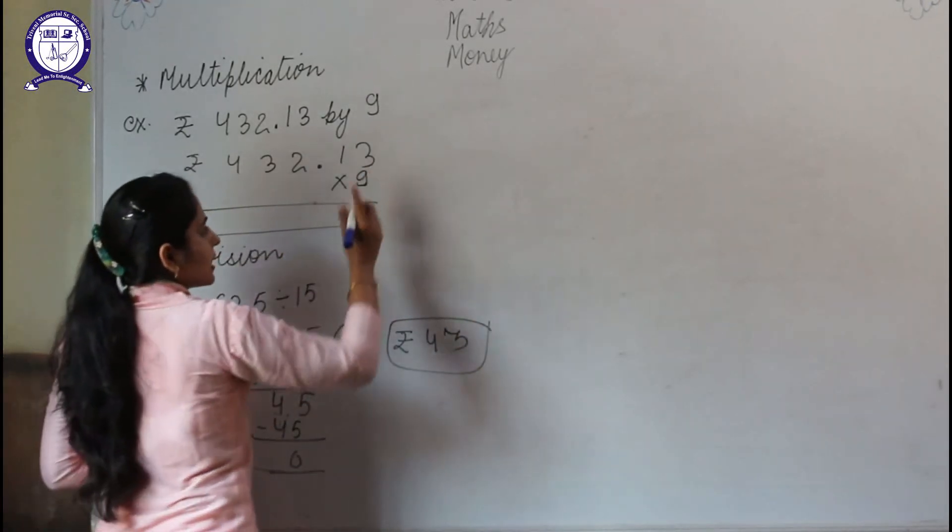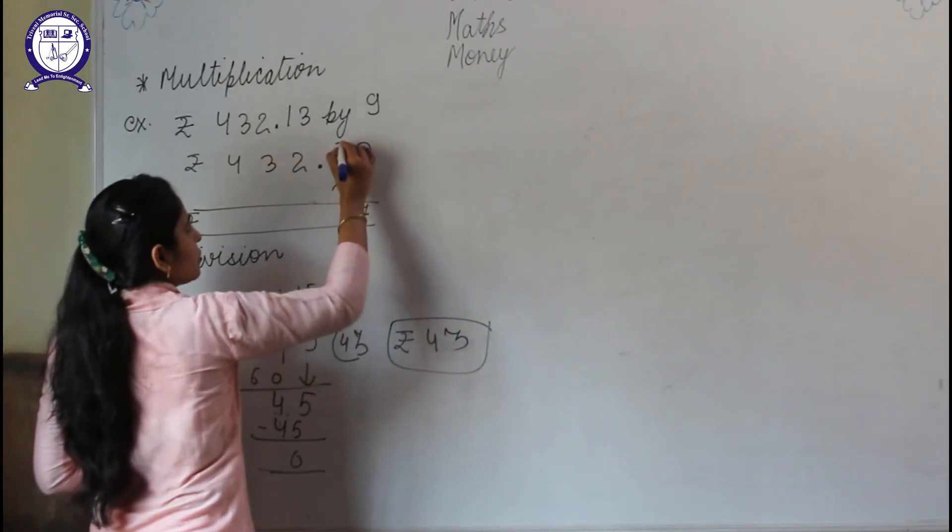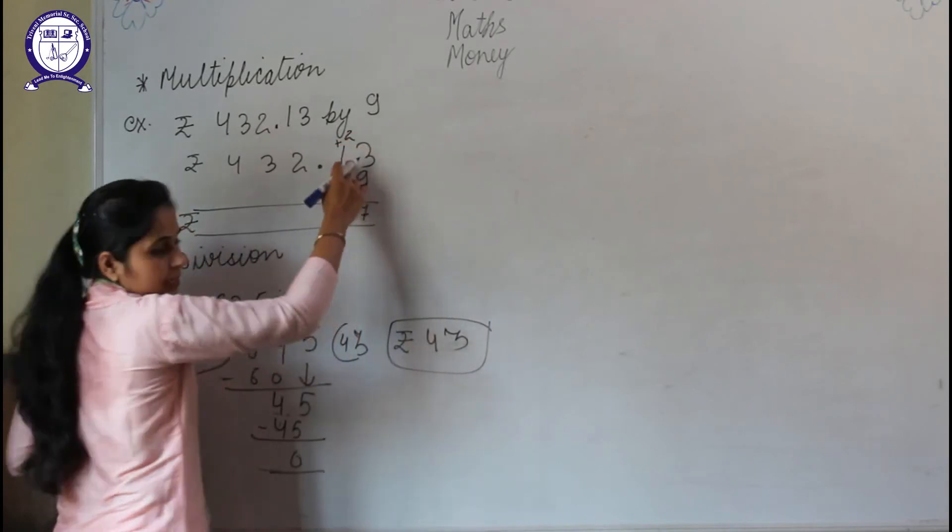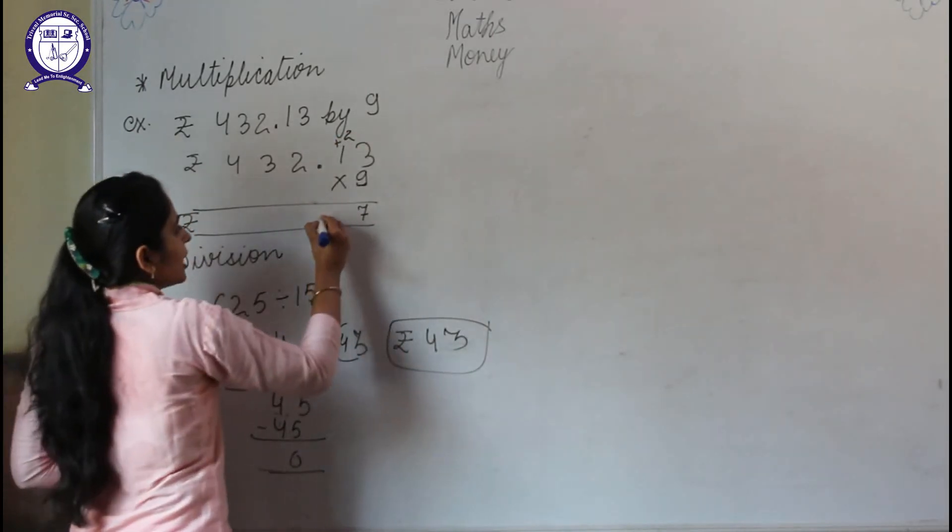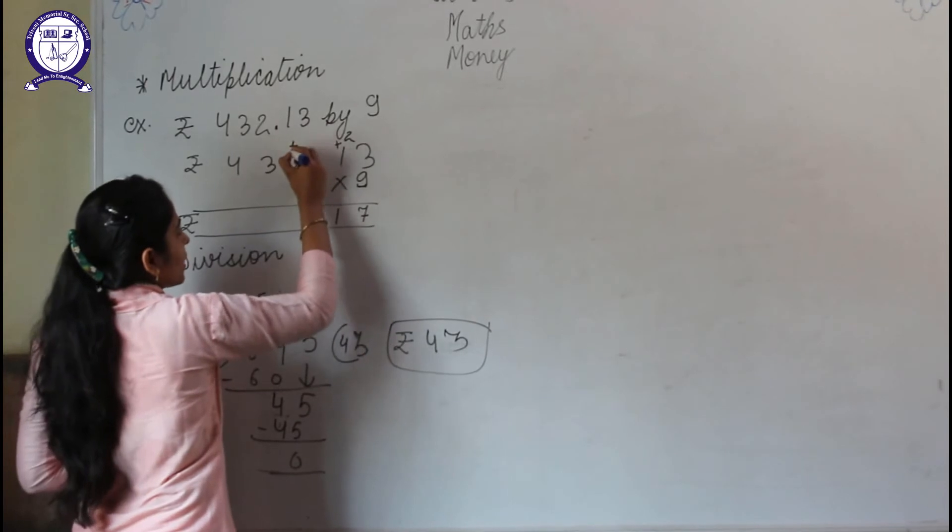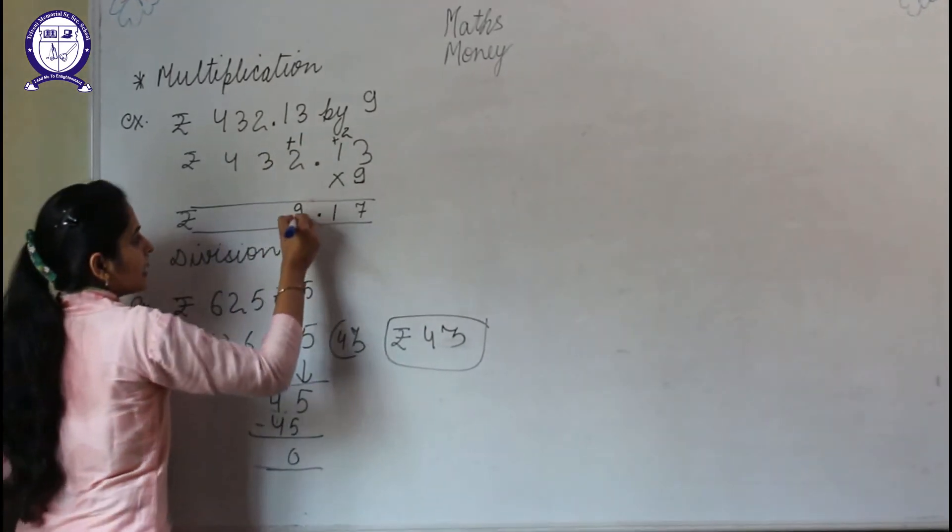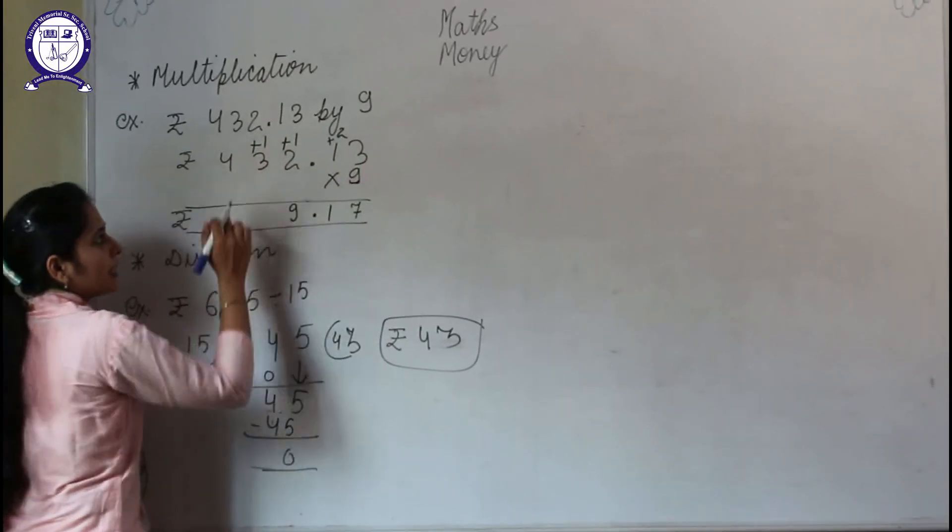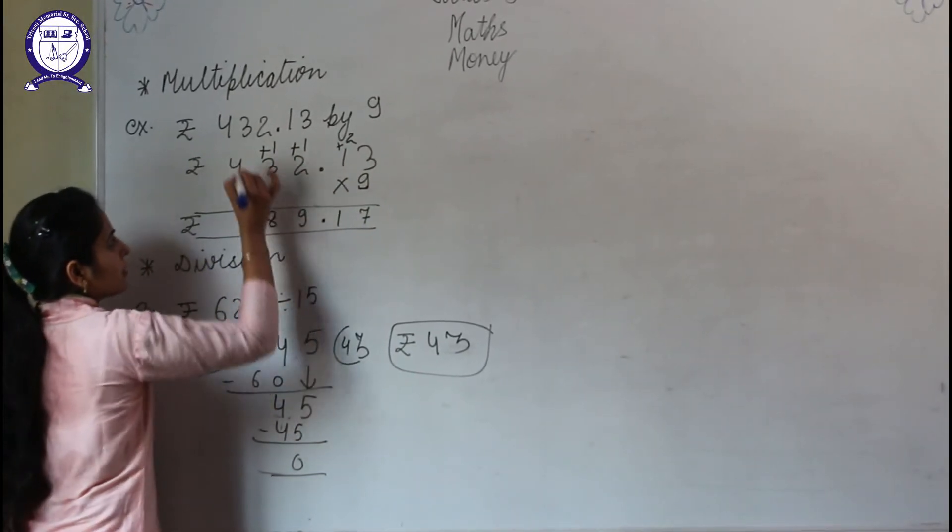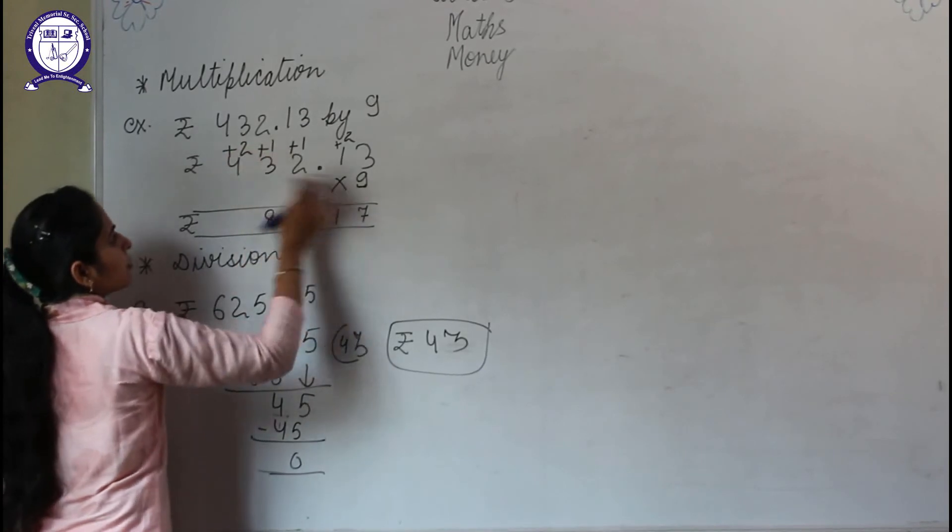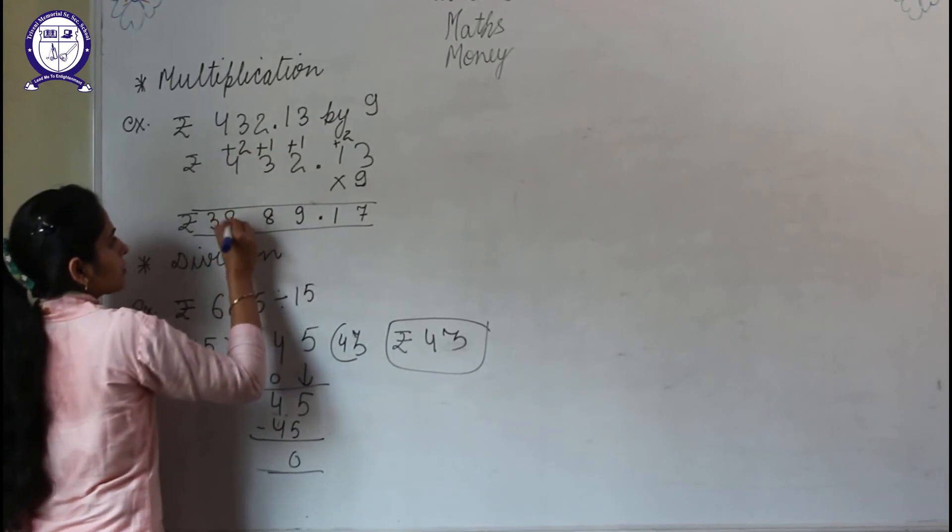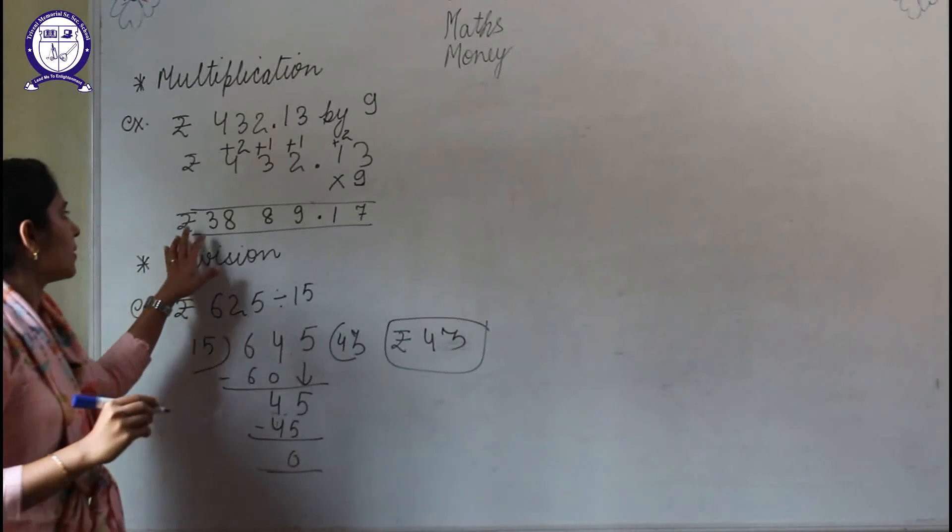to multiply. So 9 times 3 is 27, carry 2. 9 times 1 is 9, 9 plus 2 is 11, so write 1 and 1 as carry. 9 times 2 is 18, 18 plus 1 is 19, carry 1. 9 times 3 is 27, 27 plus 1 is 28. 9 times 4 is 36, 36 plus 2 is 38. So the amount will be ₹3,889